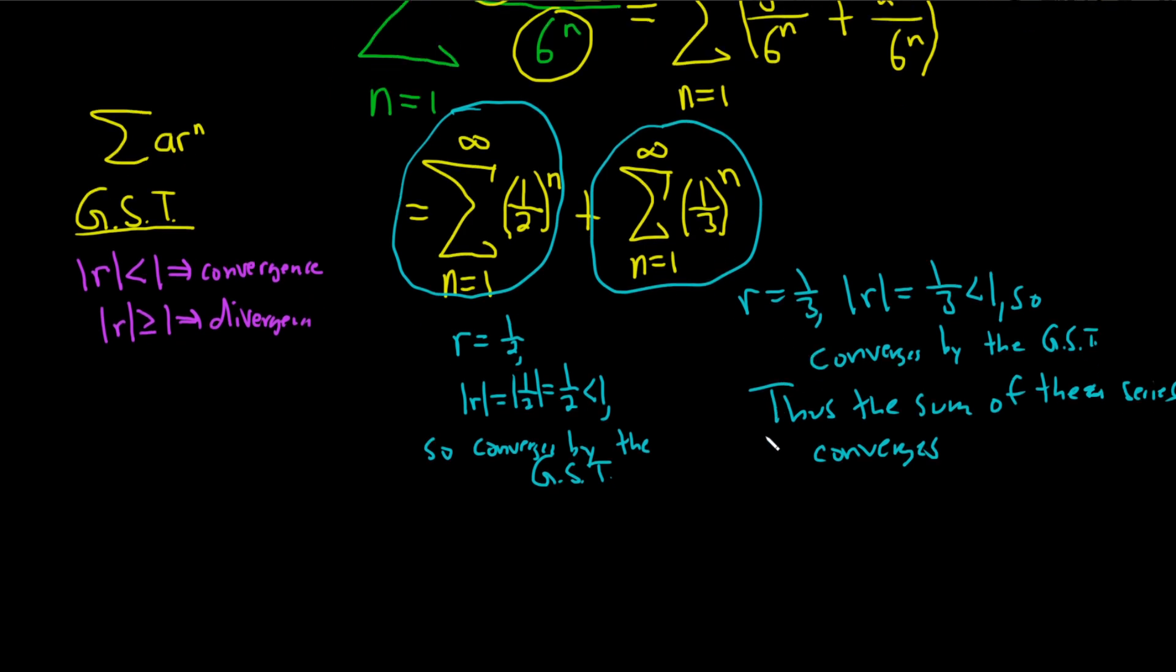The question also wanted us to find the actual sum of the series. So whenever you have a convergent geometric series and you're looking for the sum, there is a trick. So you just take this number here and you plug it in for your n. So we'll get 1 half to the first power. Then you divide, and it's always 1 minus r on the bottom. Always. So in this case, it's 1 minus 1 half.